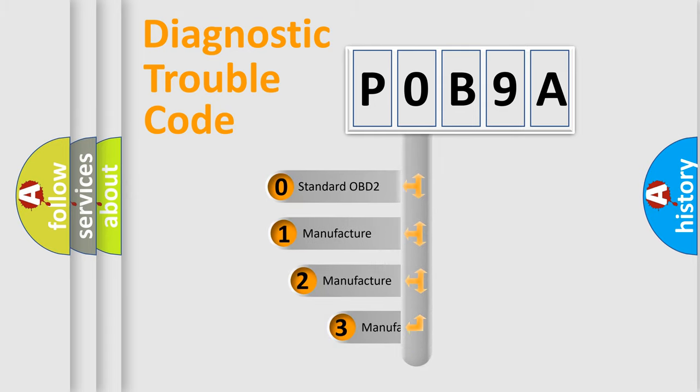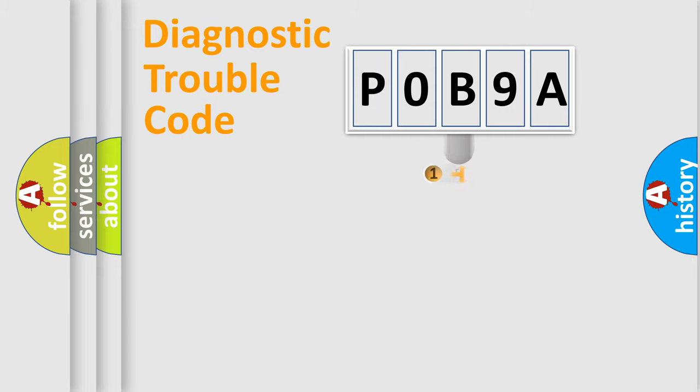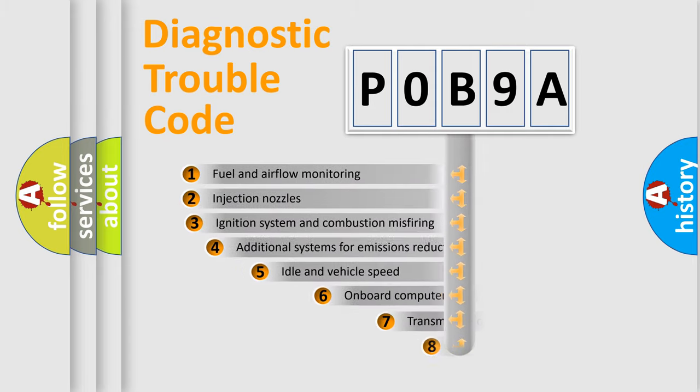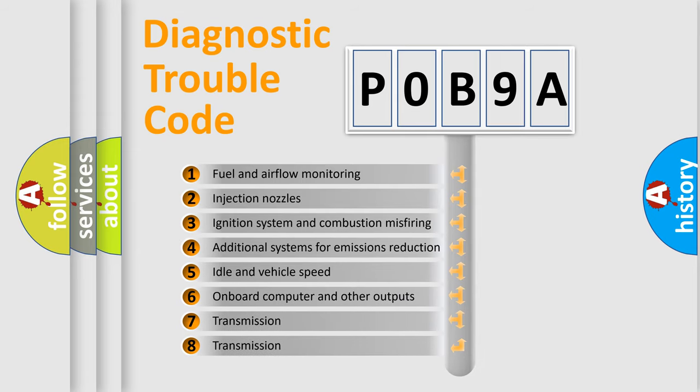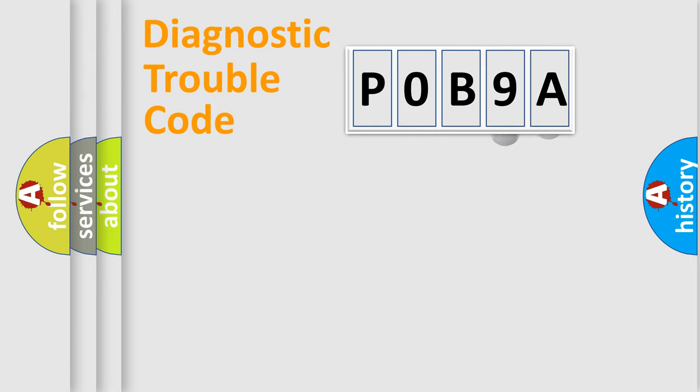If the second character is expressed as zero, it is a standardized error. In the case of numbers 1, 2, or 3, it is a manufacturer-specific expression of the car-specific error. The third character specifies a subset of errors. The distribution shown is valid only for the standardized DTC code.